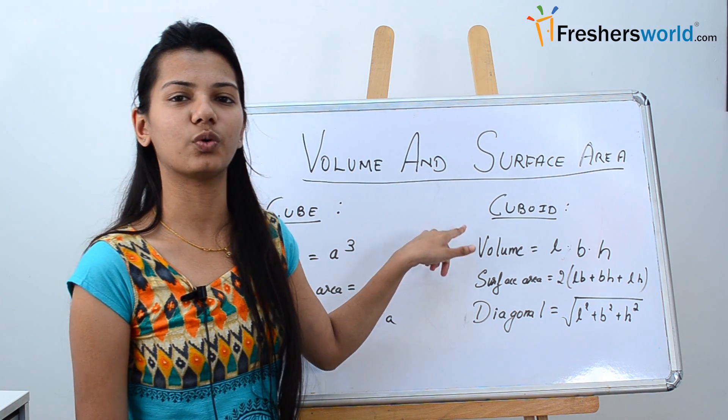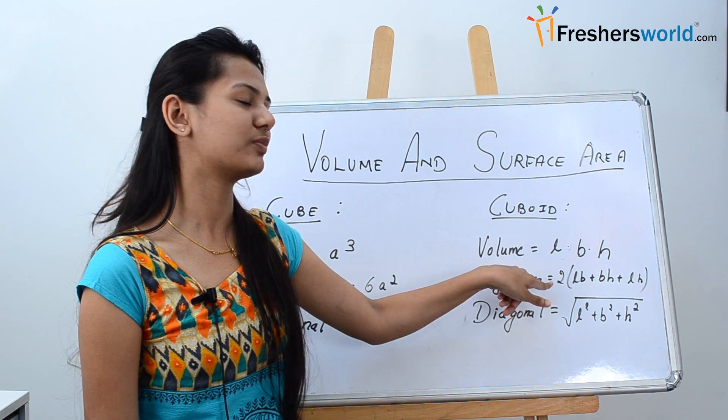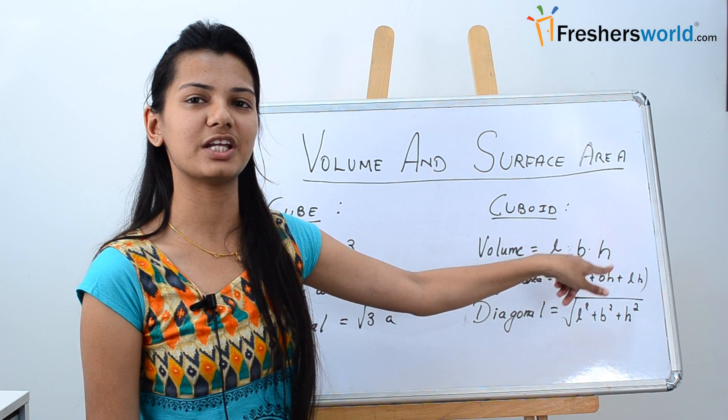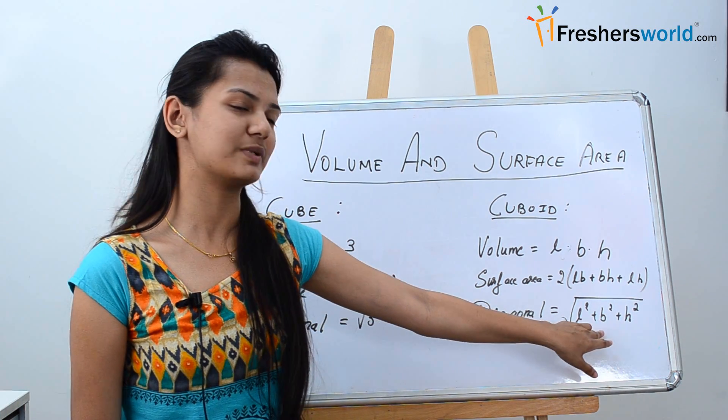Now coming to the cuboid, the volume is given by length into breadth into height. The surface area is given by 2 into lb plus bh plus lh and the diagonal is given by root of l squared plus b squared plus h squared.